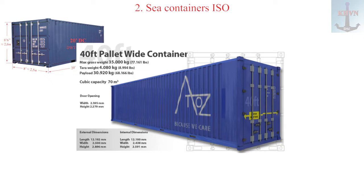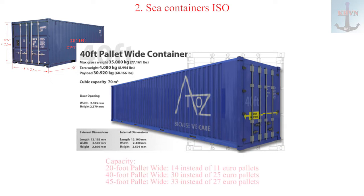Pallet-wide containers (PW): the pallet-wide container is designed to optimize the transport or storage of goods on euro pallets sized 1,200 mm × 800 mm, so it is slightly wider. The weight of an empty container is 2.3 tons.